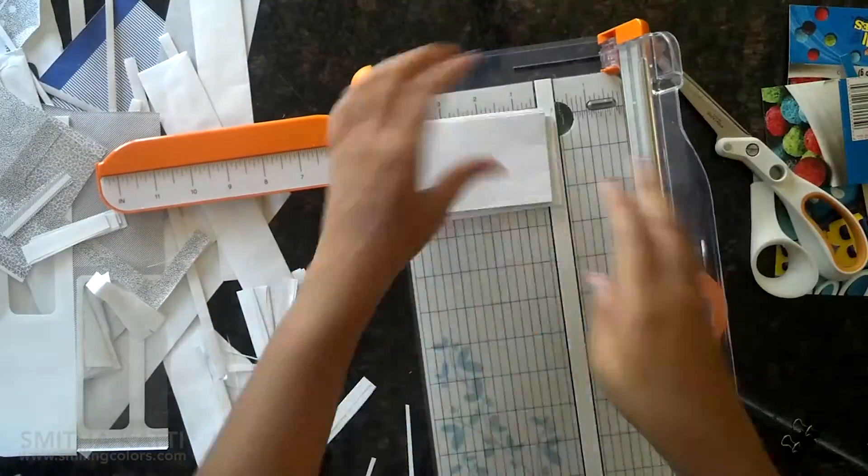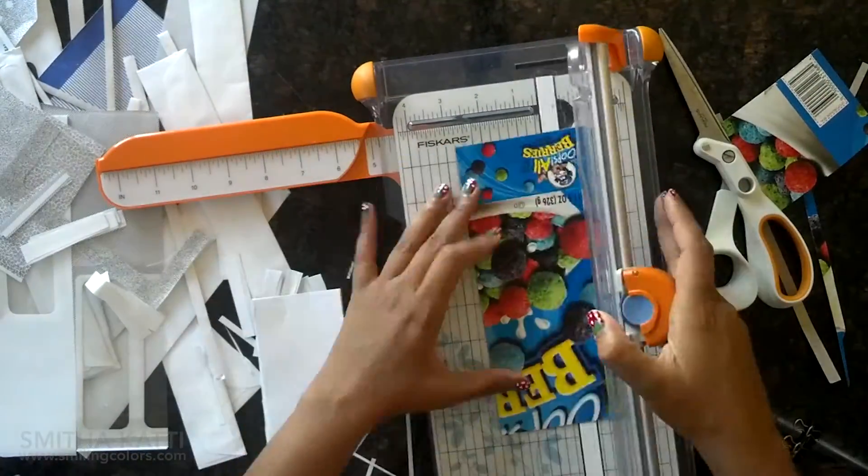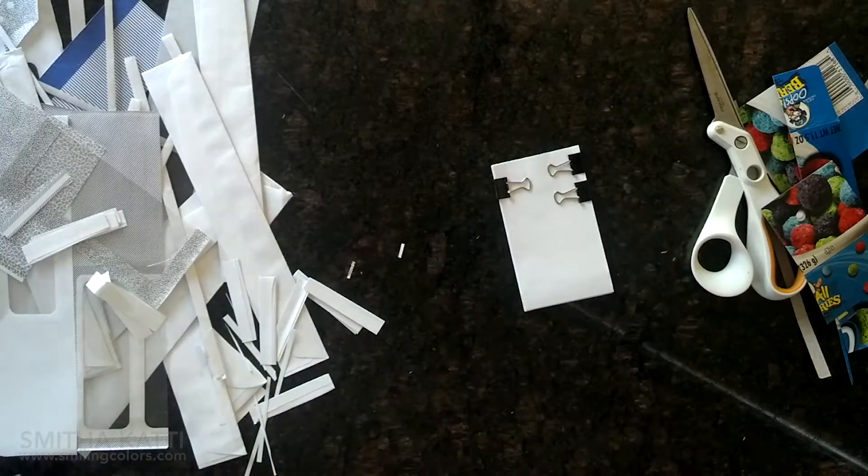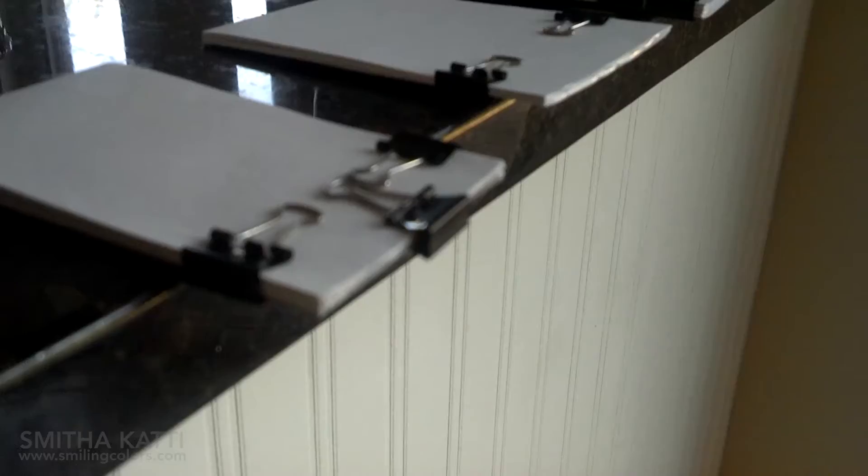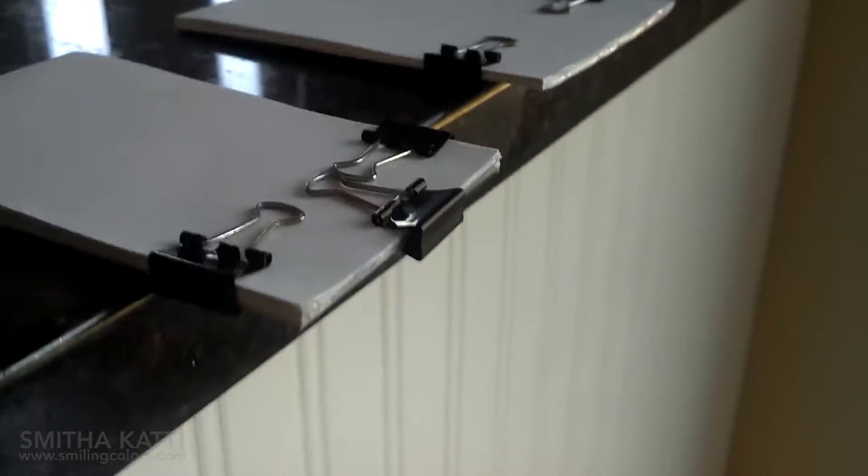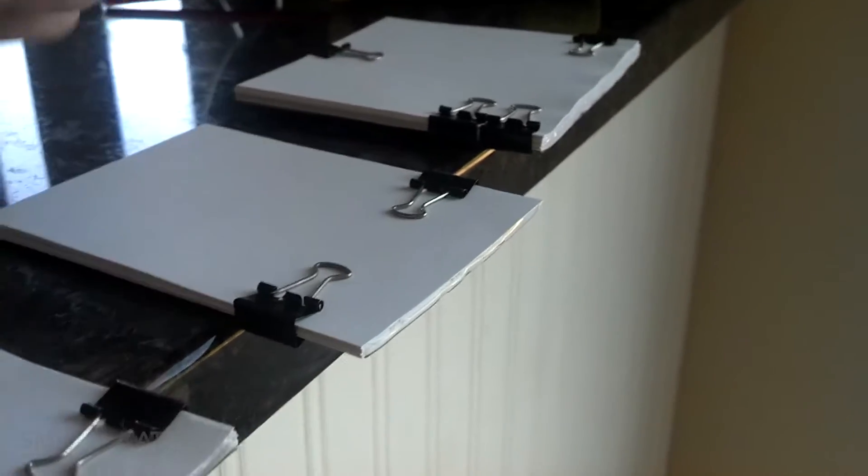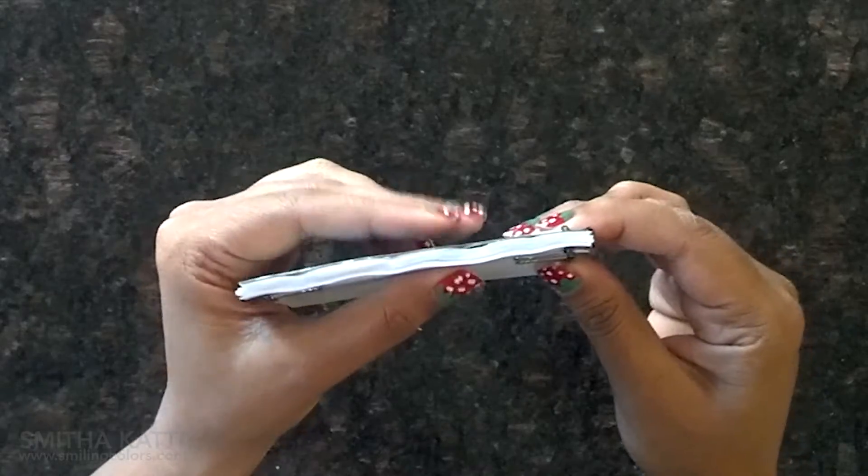I then similarly trimmed a piece of the recycled cereal box to size and then put everything together with a few binder clips. Then I am going to go over the edge with the liquid glue again. To dry these, I actually put them on the edge of my counter top with the glued edge hanging off the counter just a little. For the thicker notepad,